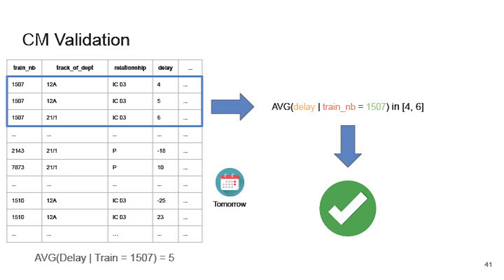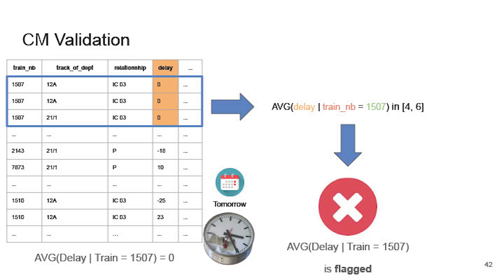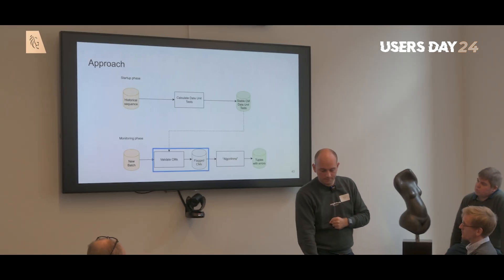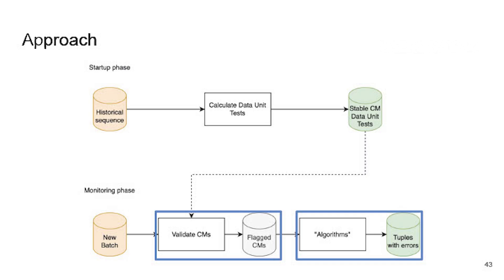Running our conditional metric on the dataset, if the average delay for a specific train is 5, and the expected range is between 4 and 6, the batch is accepted. But if that train has a broken clock, the average delay would be 0, falling outside the expected bounds — so the conditional metric becomes a flagged conditional metric, signaling that something is wrong. We do this for all stable conditional metrics, which may give us a large set of flagged ones.